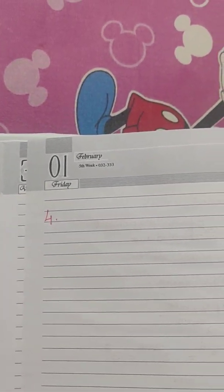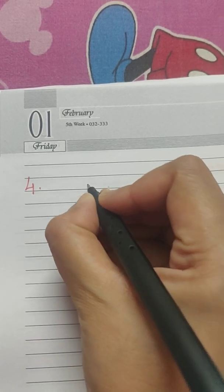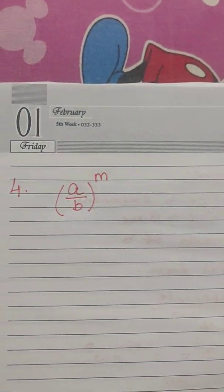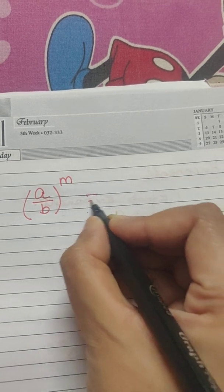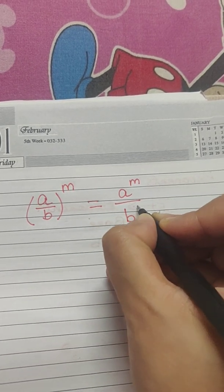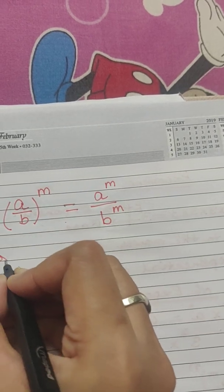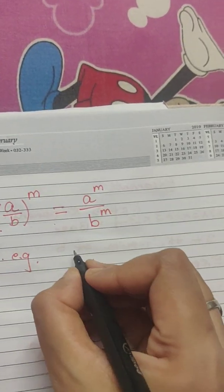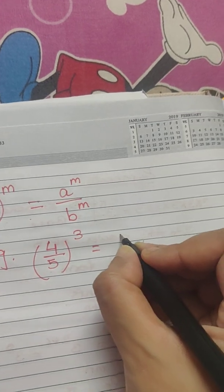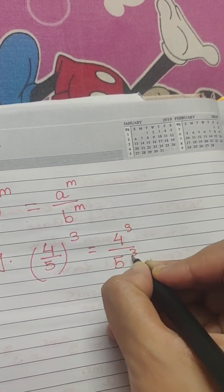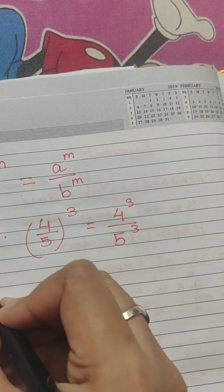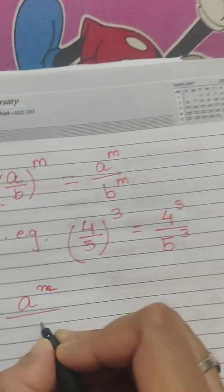In this case, suppose a by b whole is raised to the power of m, like multiplication we can separate it out into a to the power m by b to the power m. If I have to give you an example, I can say that 4 by 5 to the power 3 can be written as 4 to the power 3 by 5 to the power 3.